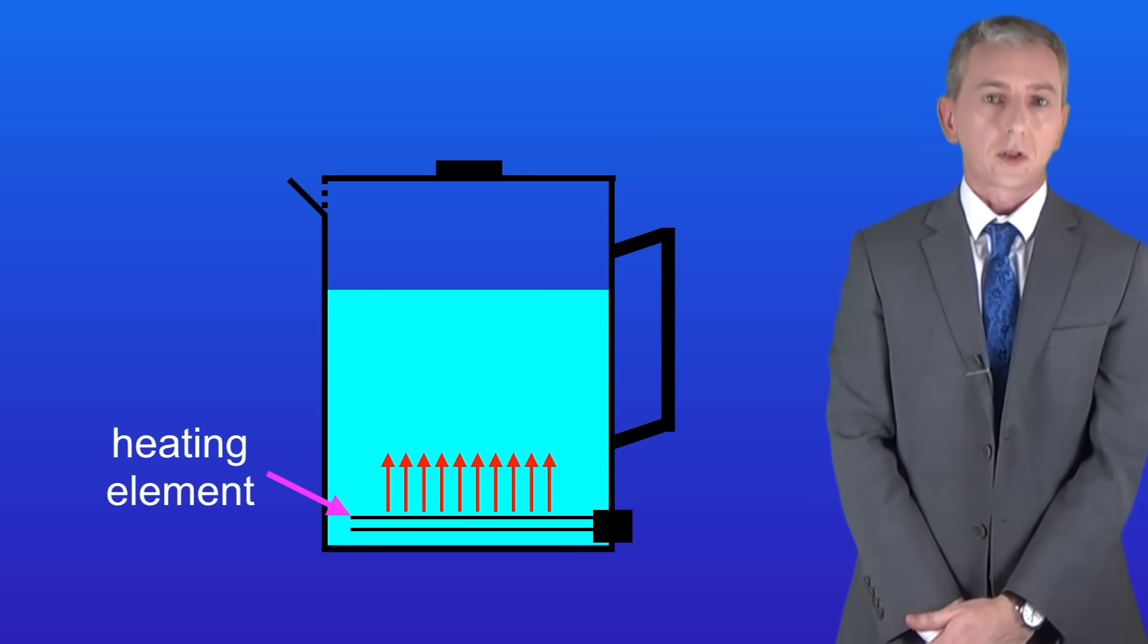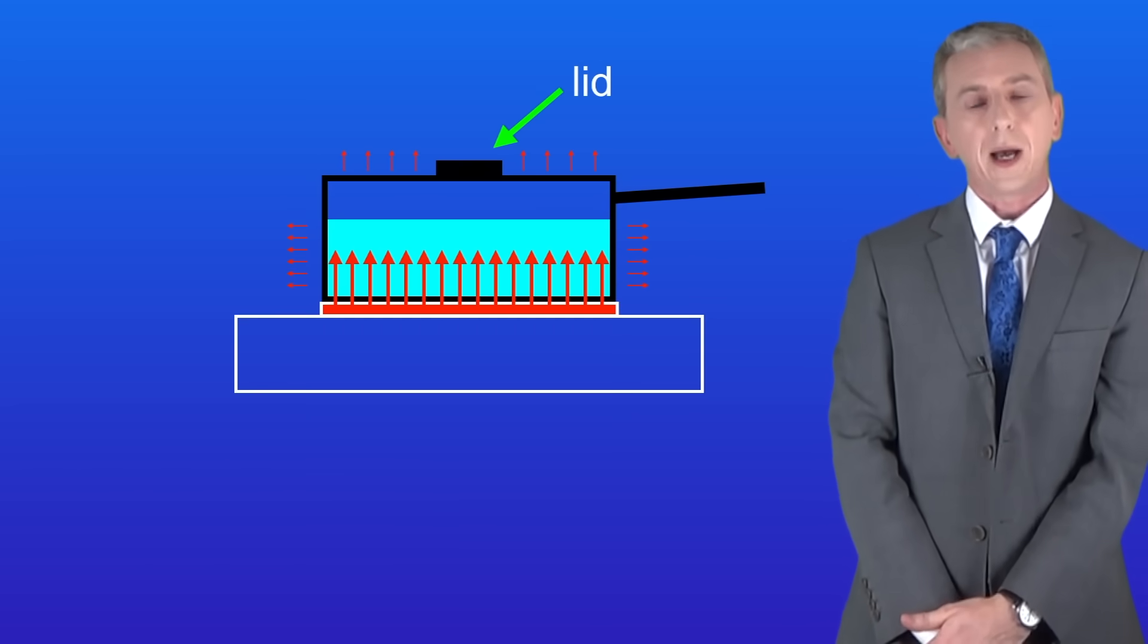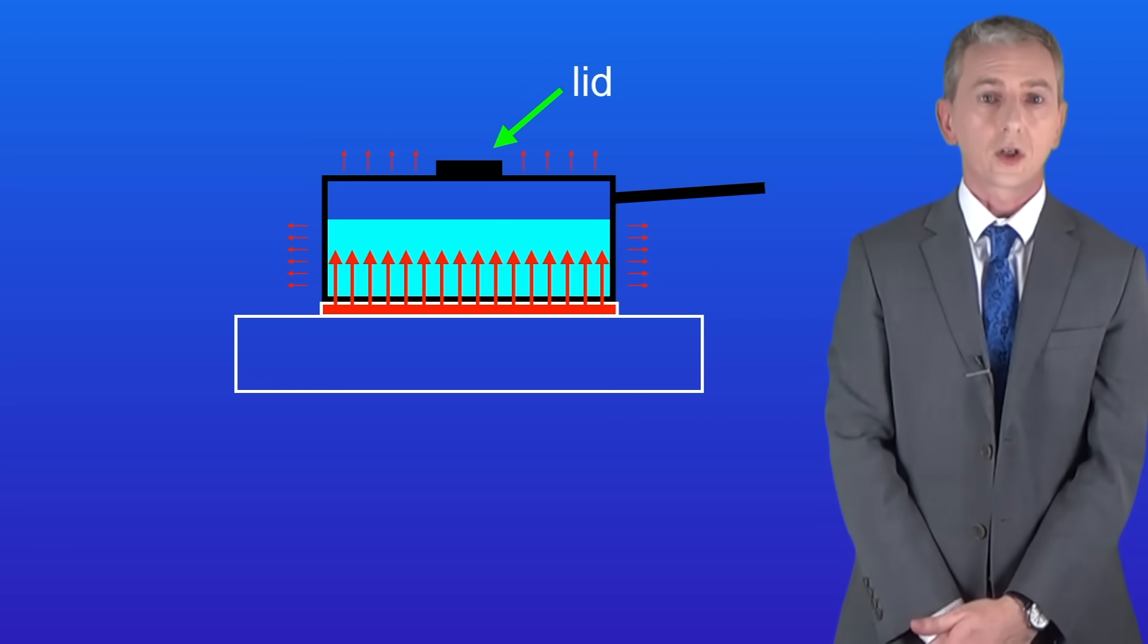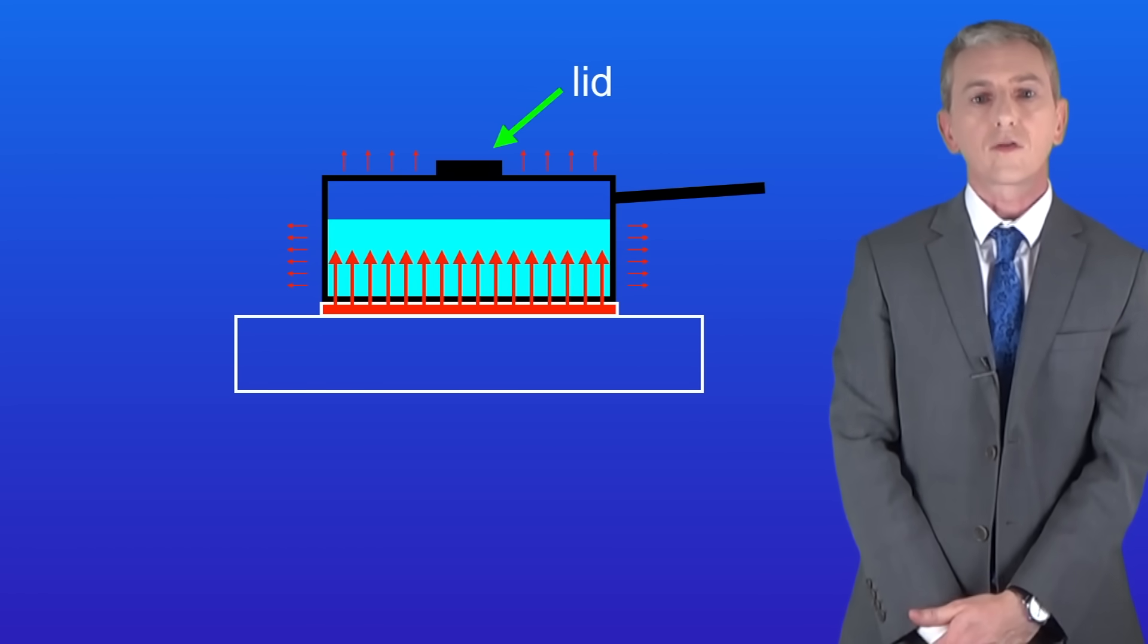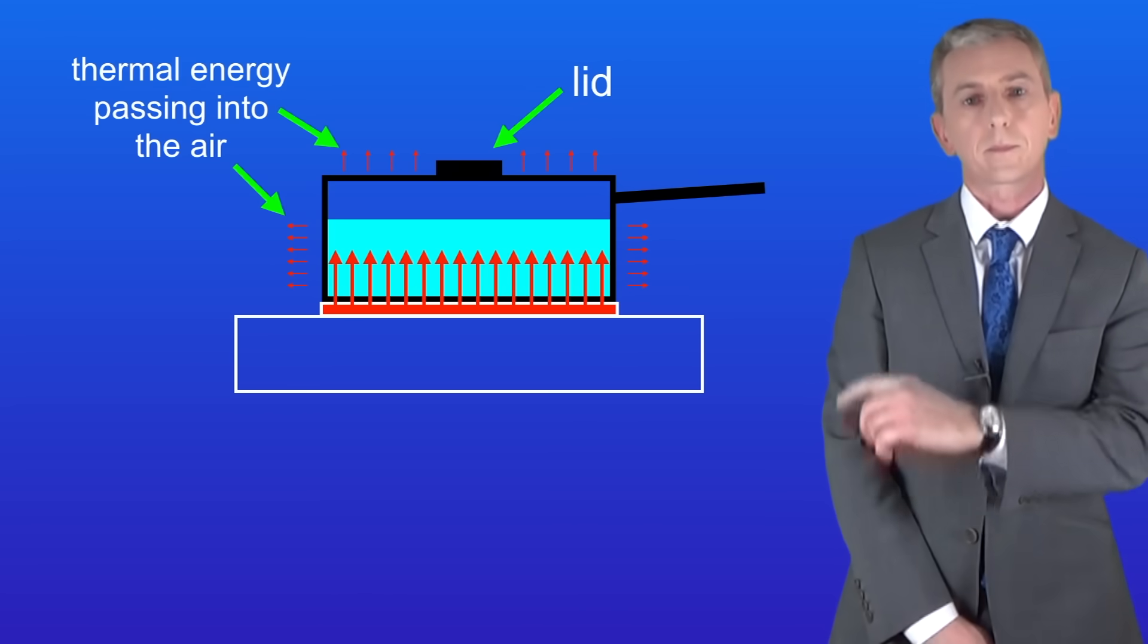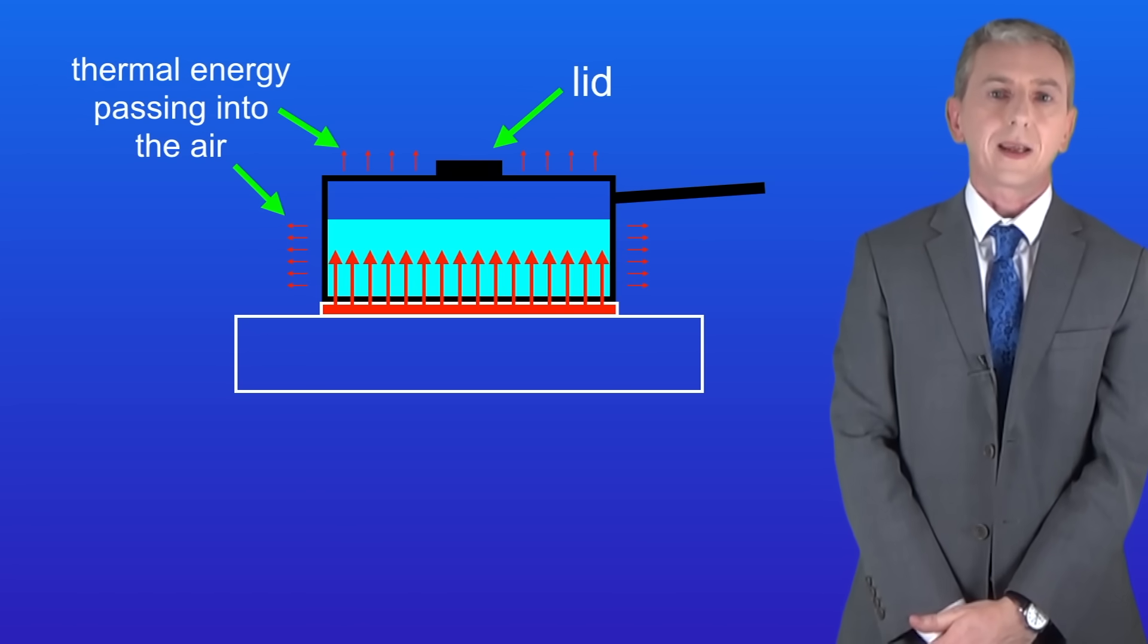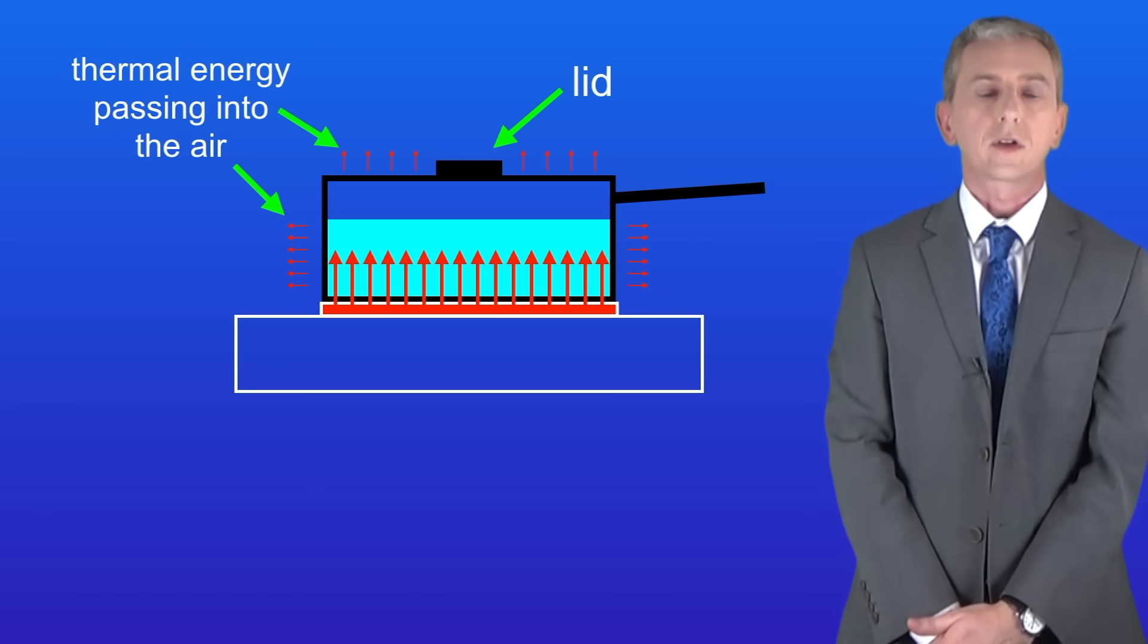Now there is one final point to consider here. If we go back to the pan we can see that metal is a good conductor of heat. So thermal energy will pass through the sides and the lid of the pan into the air like this. Now plastic conducts heat less well than metal. We say that it's got a lower thermal conductivity.